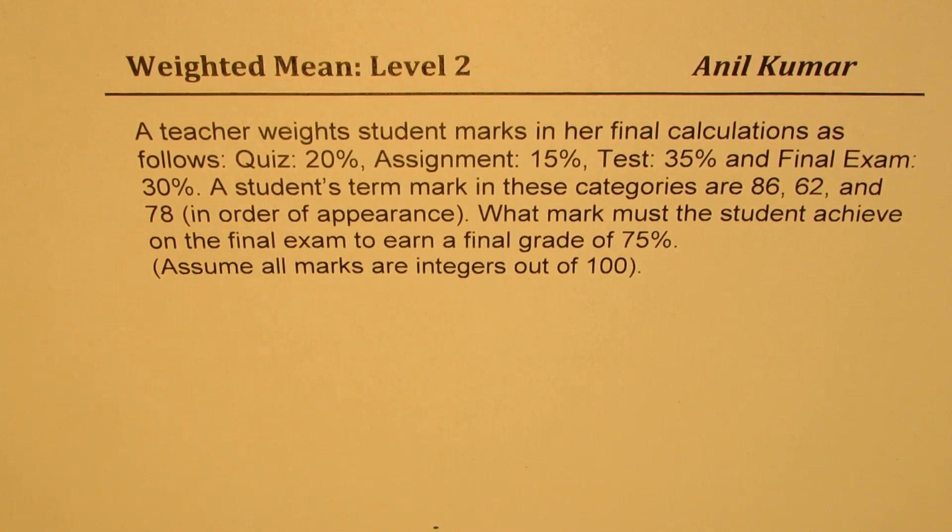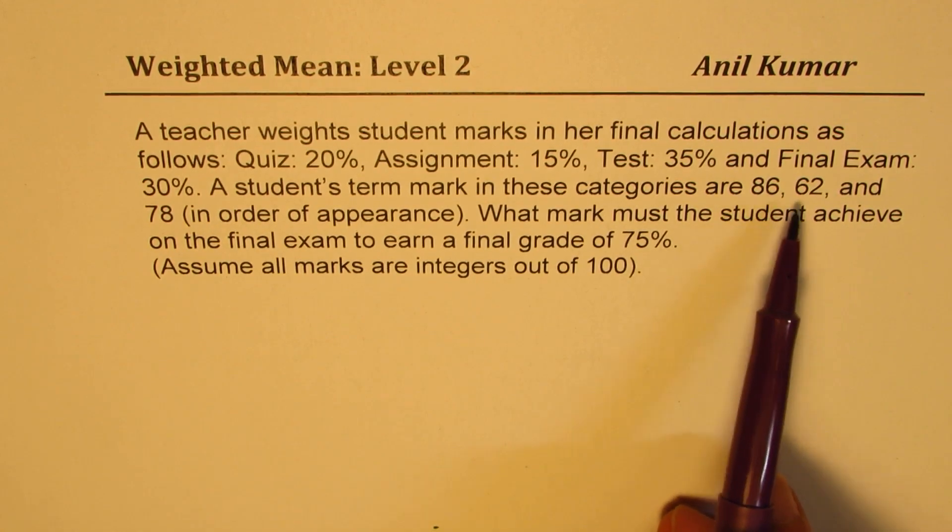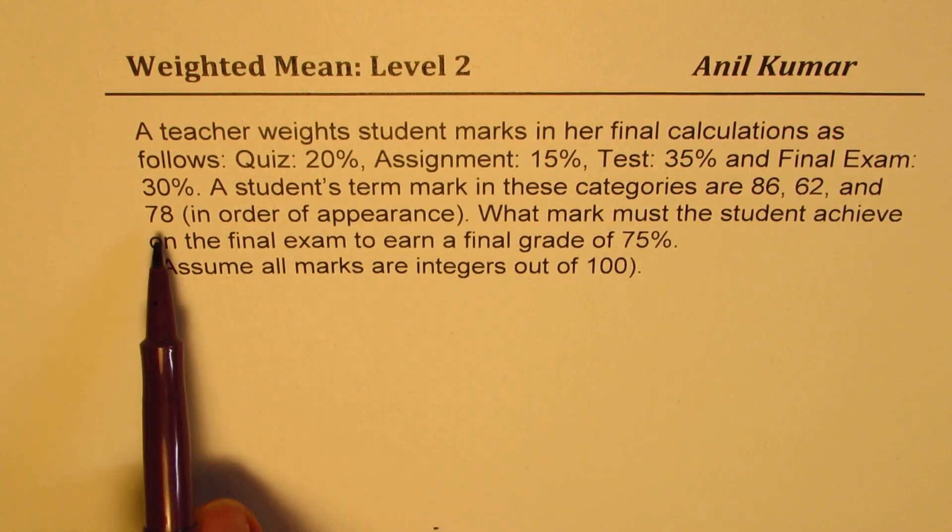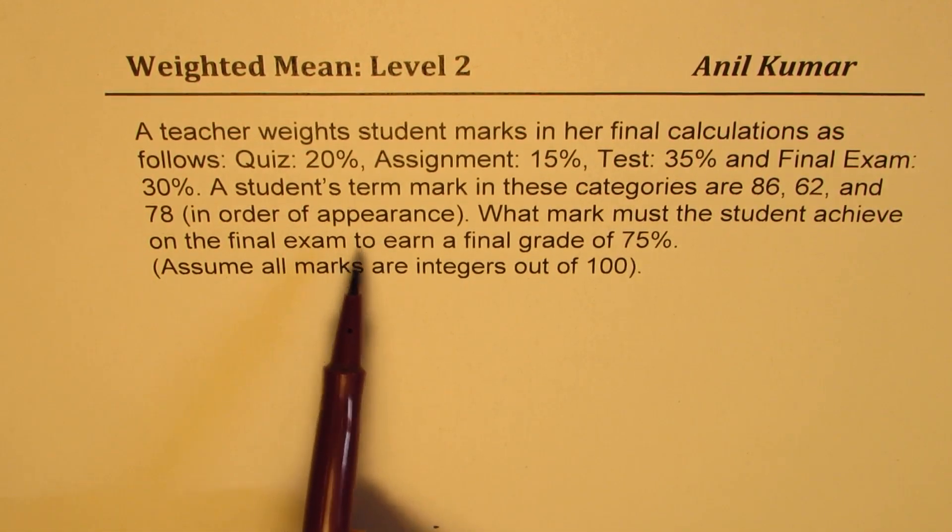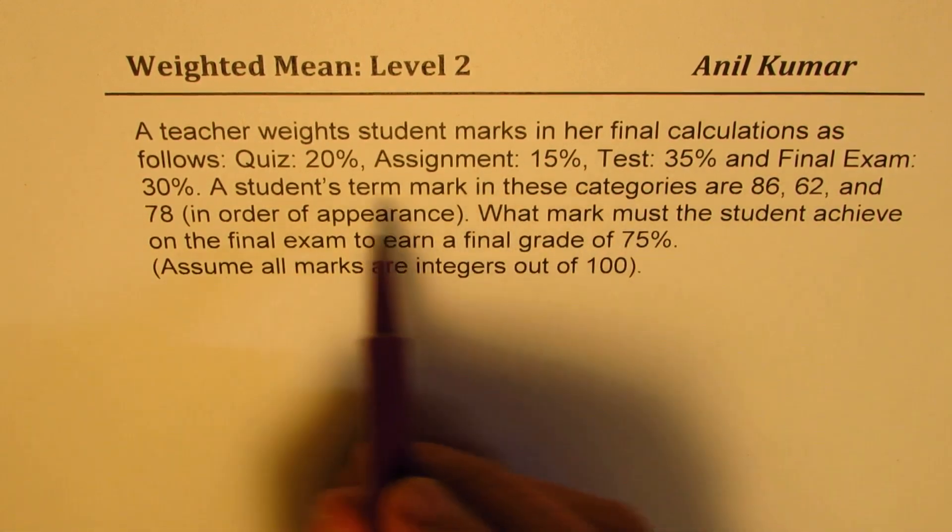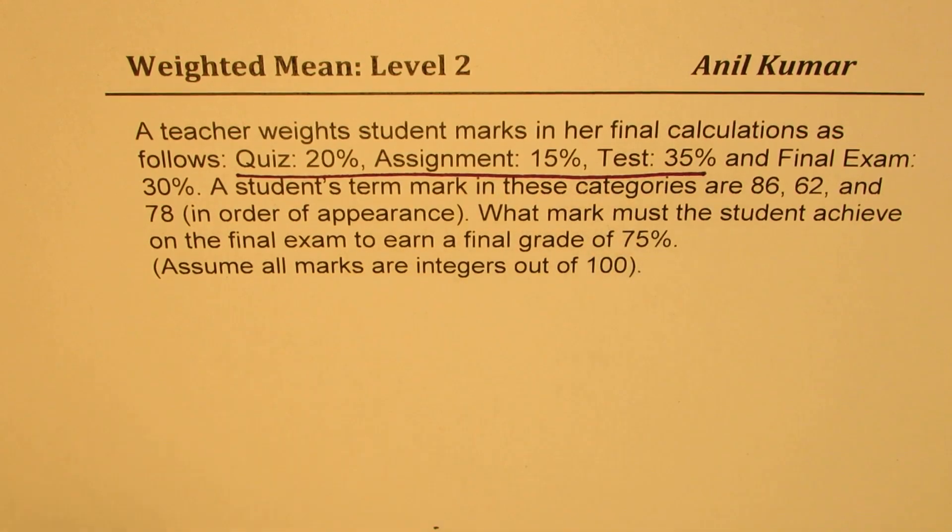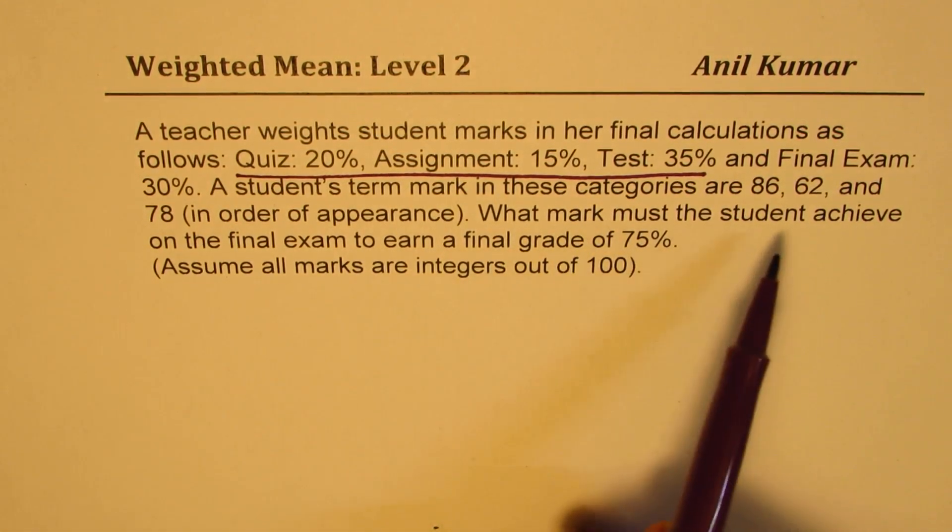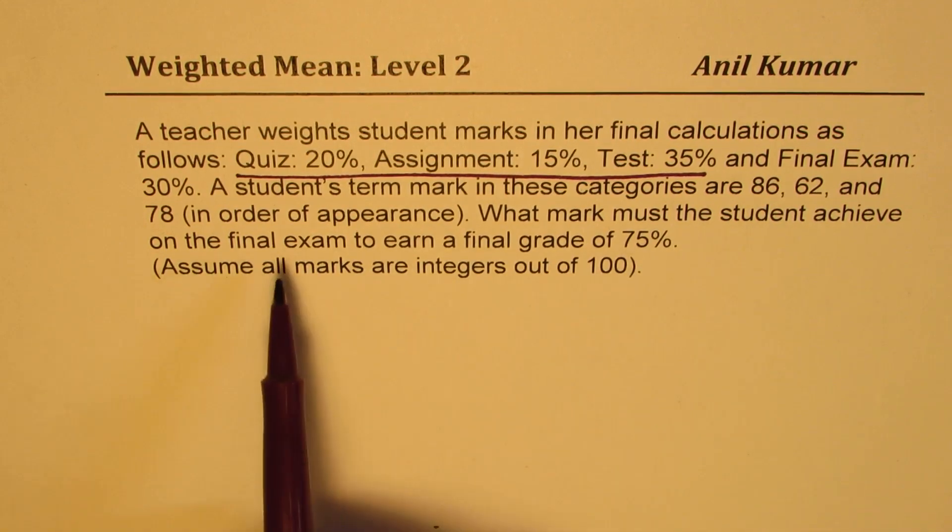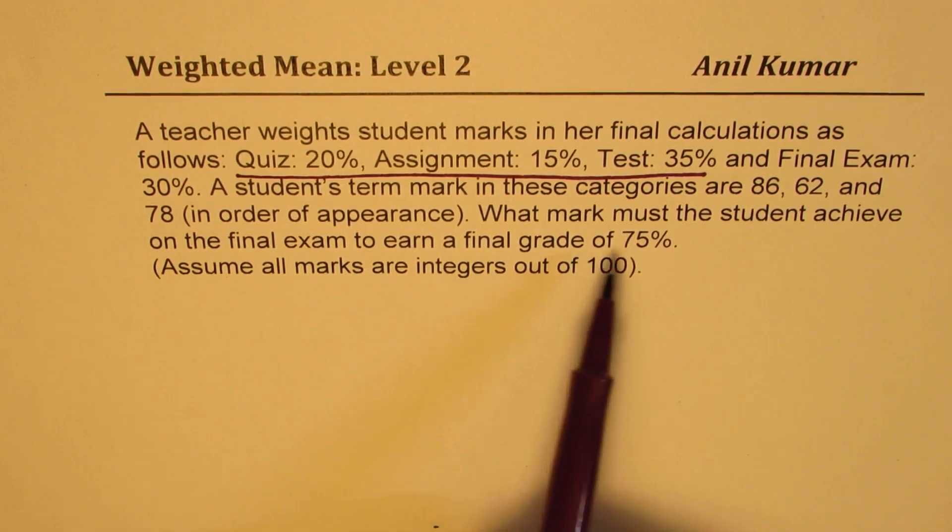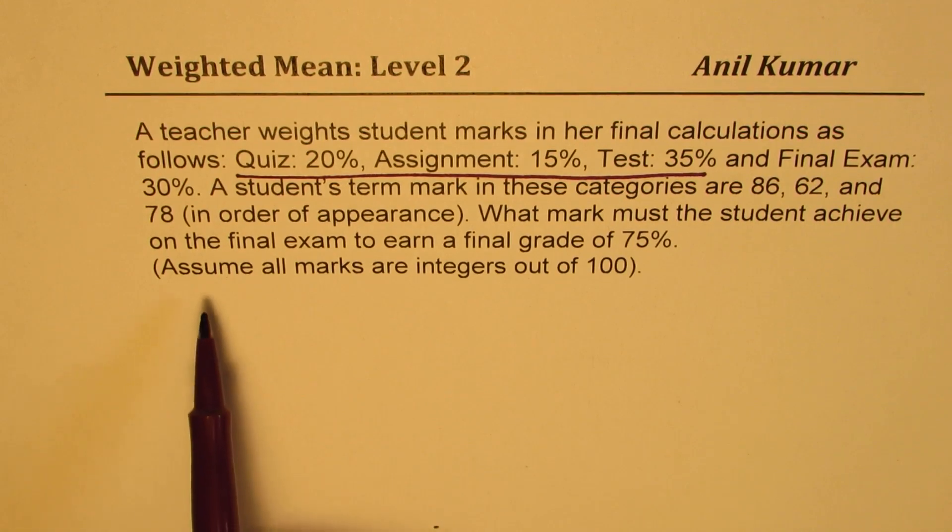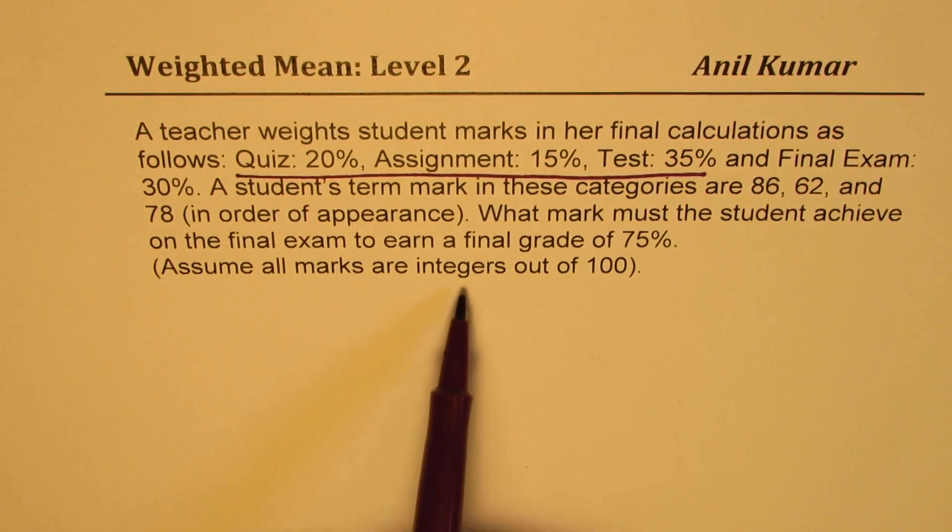A student's term mark in these categories are 86, 62, and 78 in order of appearance. So when we say term marks, that means before final exam, right? So all of this. What mark must the student achieve on the final exam to earn a final grade of 75%? Assume all marks are integers out of 100. You can always pause the video, answer the question, and then look into my suggestions.